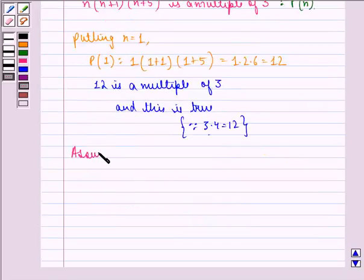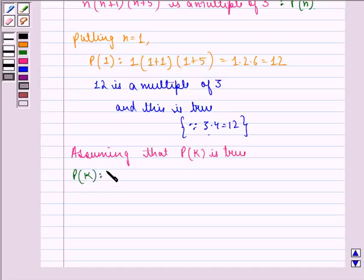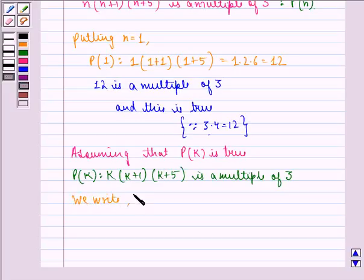Now, assuming that P(k) is true, P(k) is k(k+1)(k+5) is a multiple of 3. So we write k(k+1)(k+5) equals 3d where d belongs to natural numbers, and let this be equation 1.